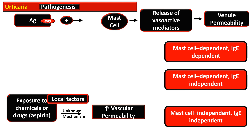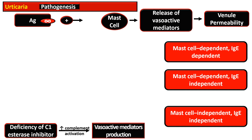Another mechanism in the mast cell-independent, IgE-independent category is deficiency of C1 esterase inhibitor. In the deficiency of this inhibitor, there is increased complement activation that results in production of vasoactive mediators.